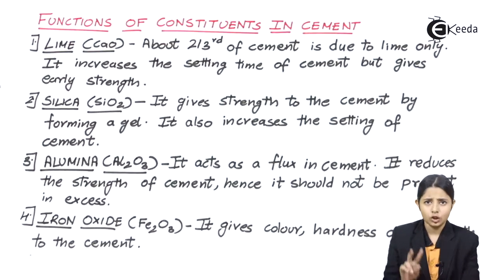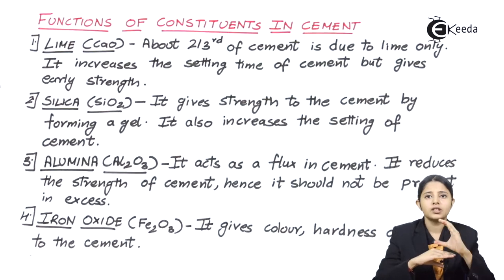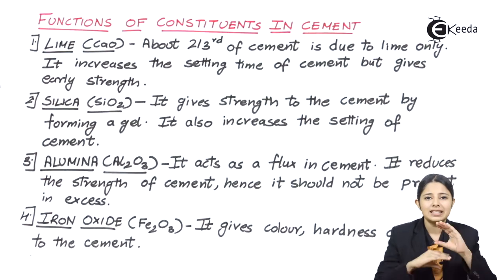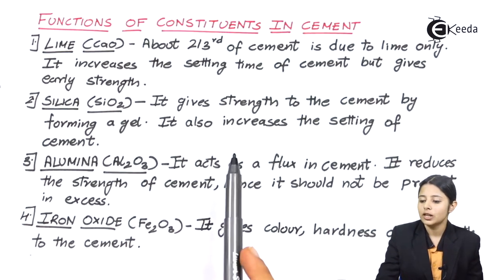Now any cement should have two things. First is gel and second is crystals. Imagine that there are two bricks and a cement paste is pasted in it. To stick both the bricks we need some gel formations in it. So the gel formation helps in setting of the cement and it helps in sticking of both the bricks. This strength in the cement is given by silica which helps in the production of gel.